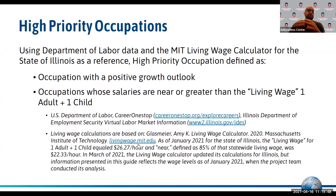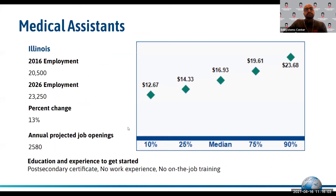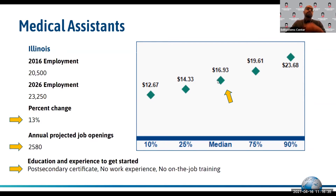We set a benchmark of around $22 per hour median earning for any role to be included in our pathway development. For example, looking at Department of Labor information for medical assistants, we considered the 10-year percent increase in that role, the net positive job openings, the typical education needed to get started, and the median salary — all informing decision points about a role's inclusion in our program of study guides.